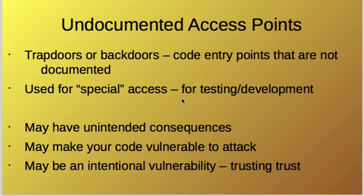In the previous part we saw how there can be undocumented access points inside code — like trapdoors and backdoors — that people may have used for testing or development. If you forget to remove them from your release code, you end up with release software that still has these special access points built in.